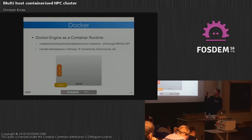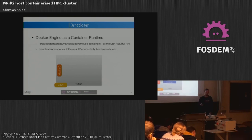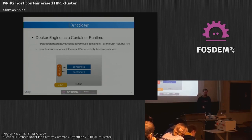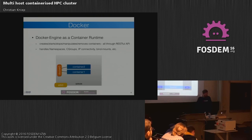A little bit about the networking part. By default, the Docker engine will instantiate the Docker 0 bridge on your host. When you spin up a container by default, you will get an IP address from this Docker bridge, which is a private host-only network. All containers running on the system have connectivity through this bridge. You could also use the networking namespace of the server, so you get the same IP address, the same hostname, and so on. You could also start a container without any network.